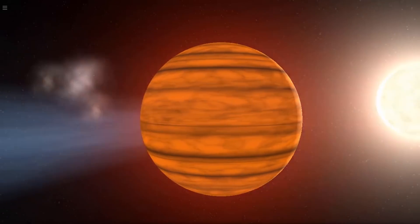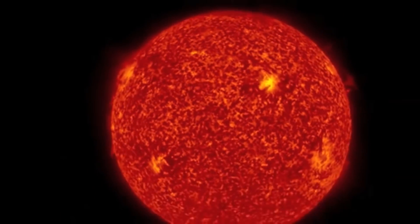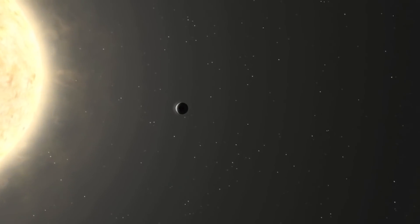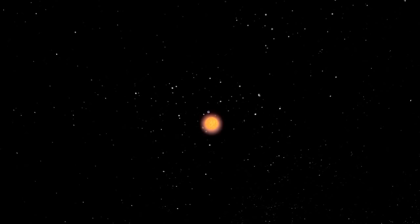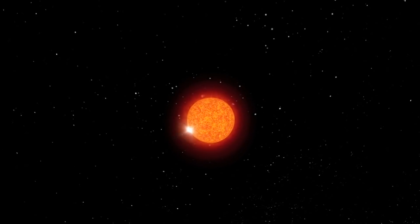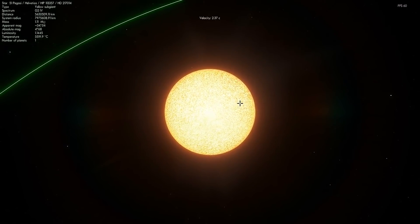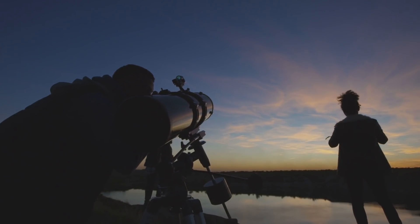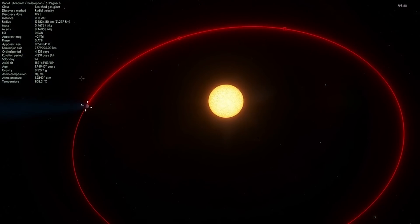51 Pegasi b was the first extrasolar planet confirmed to orbit a Sun-like star. The planet orbits the fifth magnitude star, 51 Pegasi, located 48 light-years away from Earth in the constellation Pegasus. 51 Pegasi has physical properties like luminosity and temperature very similar to those of the Sun. The extrasolar planet is not visible from Earth, but its presence was deduced in 1995 from the wobble that its gravity induces in the parent star's motion in a four-day cycle.